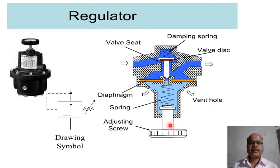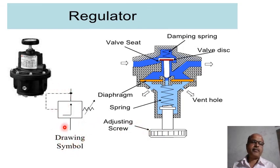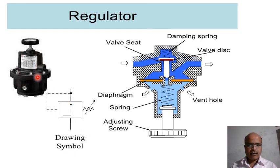Another representation of the internal structure shows a damping spring, valve disc, valve set, diaphragm, front hole, and adjusting screws. This is the symbolic representation and overall structure of the regulator. Pressure regulators reduce and control air pressure in compressed air systems including rotary screw air compressors, and are frequently referred to as PRVs — pressure reducing valves.